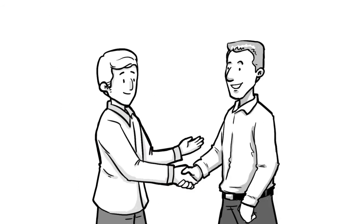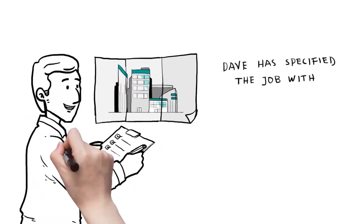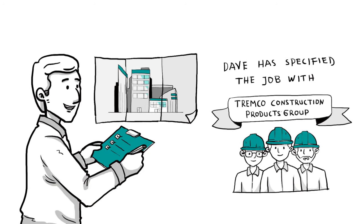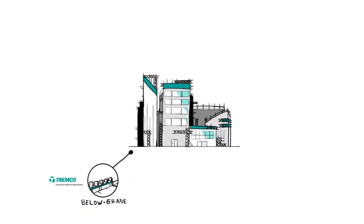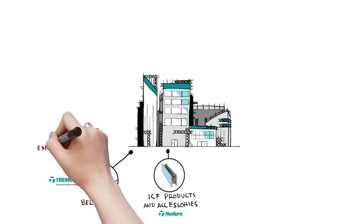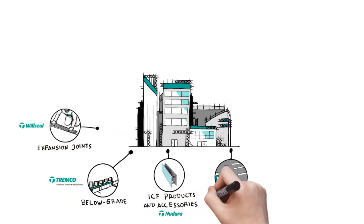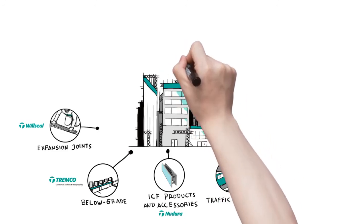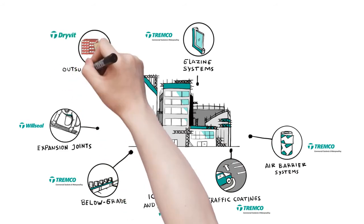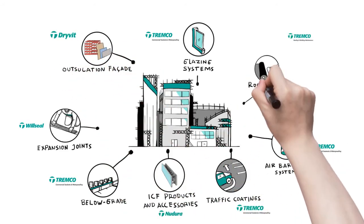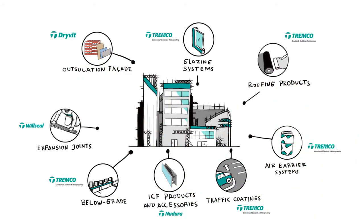After speaking with Pete, Dave has specified the job with a full Tremco Construction Products Group solution, including below-grade waterproofing, ICF products and accessories, expansion joints, traffic coatings, glazing systems, air barrier systems, insulation facade and roofing products, all supported by a building envelope maintenance package.